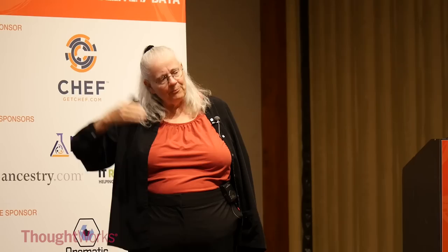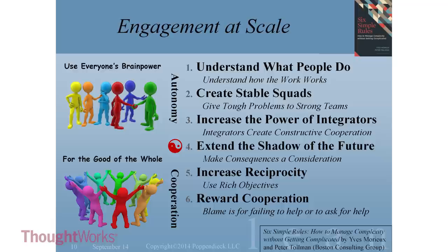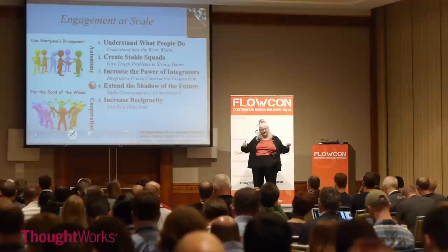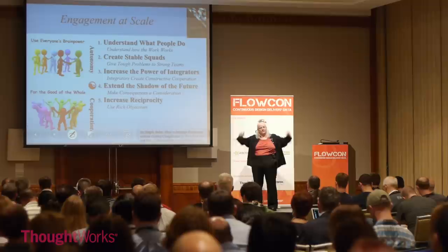So you have to have a way to create integrators — more on that in a workshop. The next rule is to extend the shadow of the future, which means making sure teams will have to live with the consequences of whatever decisions they make over time. And increase reciprocity: you want what they call rich objectives — overriding big ideas. Then each team needs to know how they contribute to that objective and how they help their partner teams be successful. Not just how they're successful themselves, but how they help their partners reach the objective — so they don't sub-optimize.